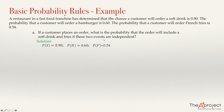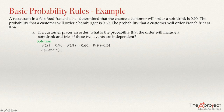If the two events are independent — soft drink and fries — then the formula tells me that I need to multiply the two probabilities. So the probability of S and fries will be the probability of S times the probability of fries, which is 0.90 times 0.54, equals 0.486.